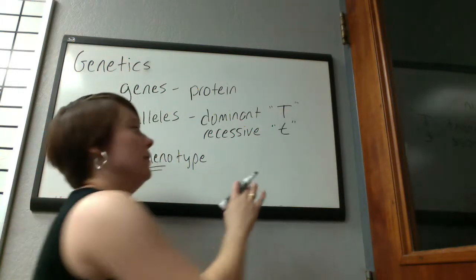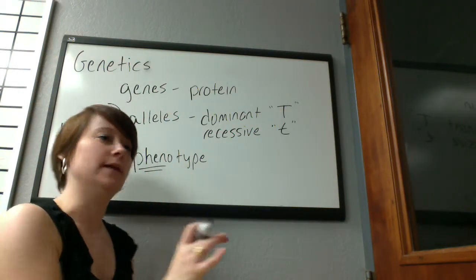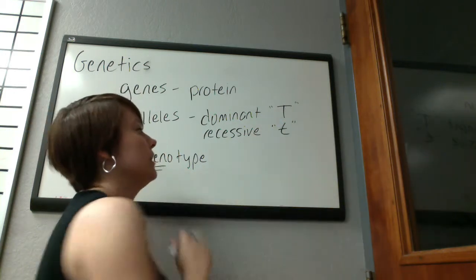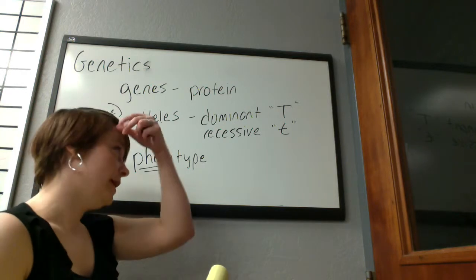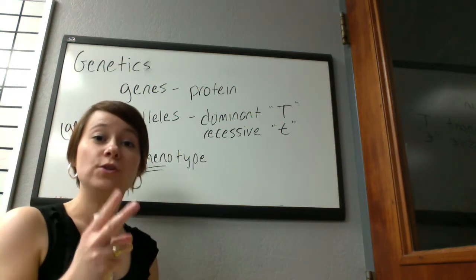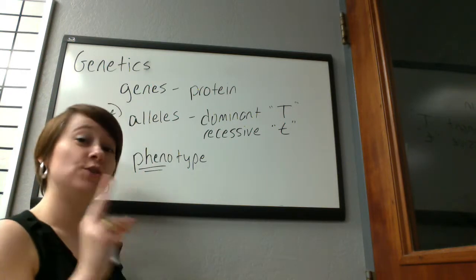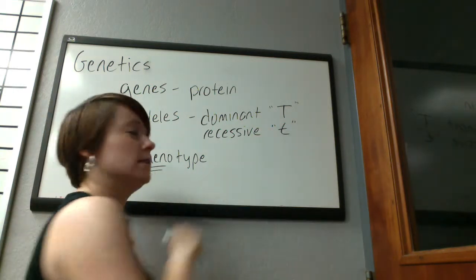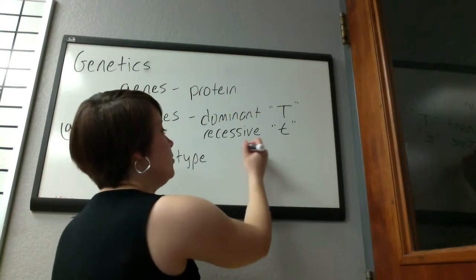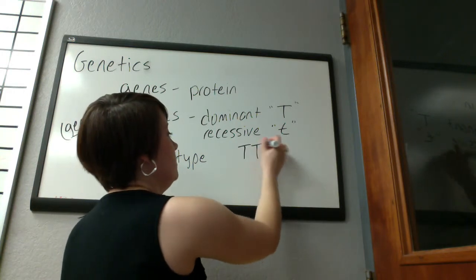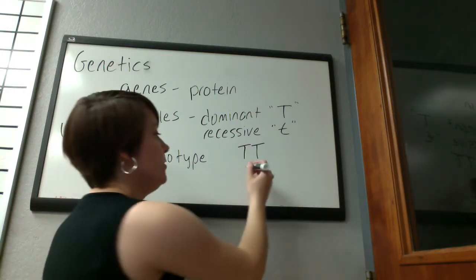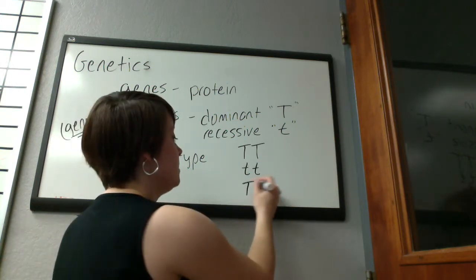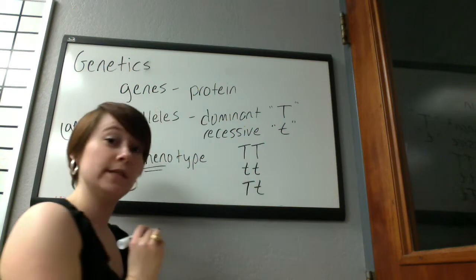You typically use the same letter for a trait, but an uppercase letter for the dominant allele and a lowercase letter for the recessive allele. Most traits end up being controlled by two alleles, and so there are three possible combinations: you can have two dominant alleles, two recessive alleles, or one dominant allele and one recessive allele.